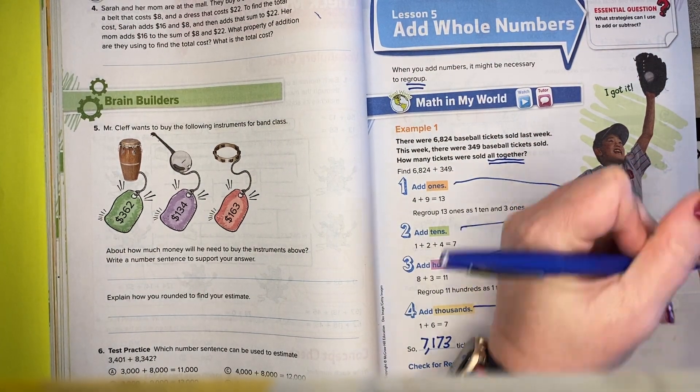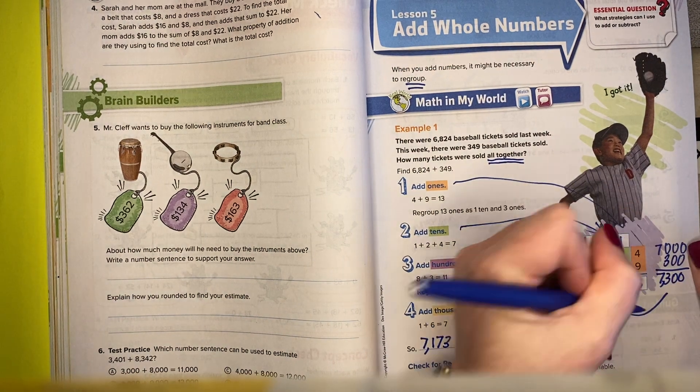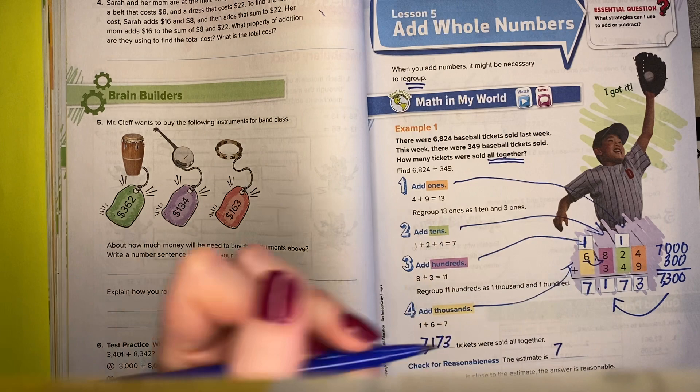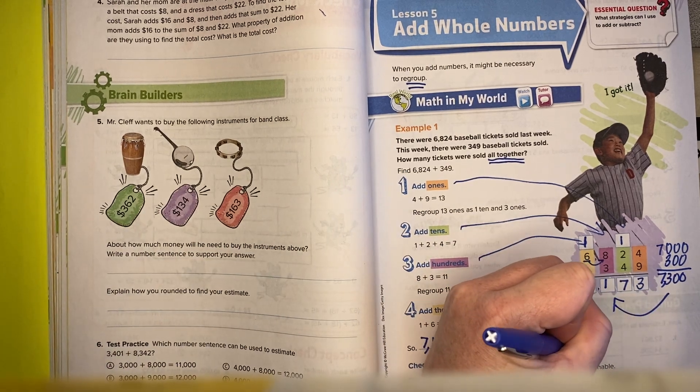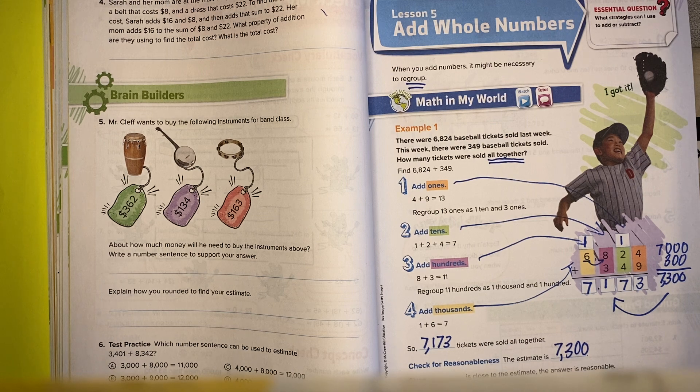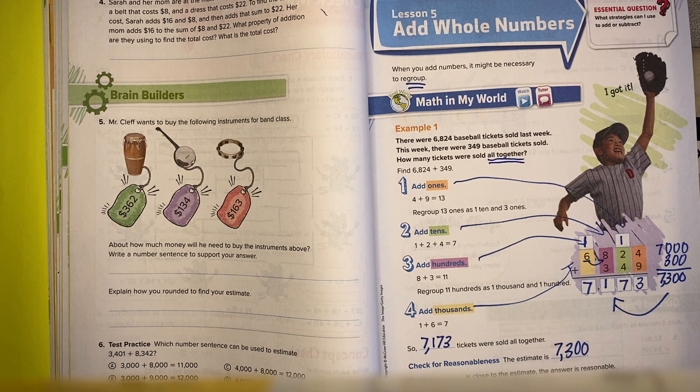I'd get an answer of 7,300. That's close-ish to this answer, so it's a pretty reasonable answer. So 7,300 is close-ish to that number. Could I have made maybe a mistake in there? Of course, but at least it's close.